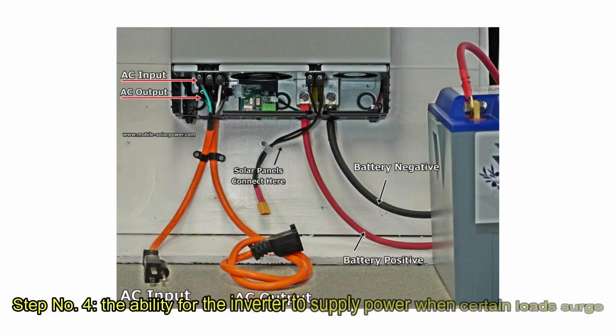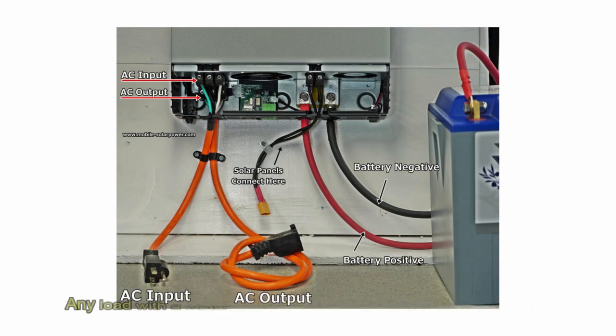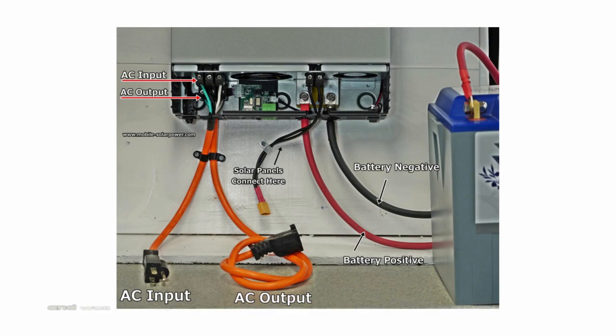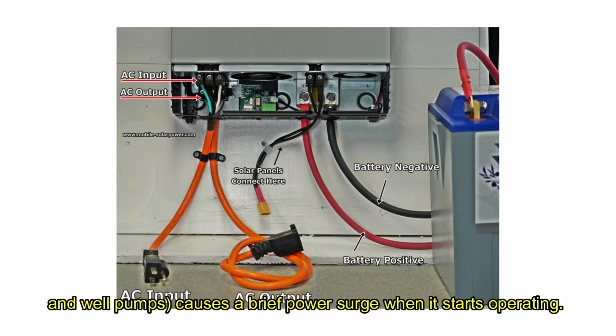Step number four, the ability for the inverter to supply power when certain loads surge. Any load with a motor, such as a refrigerator, washing machine, and a well pump, causes a brief power surge when it starts operation.